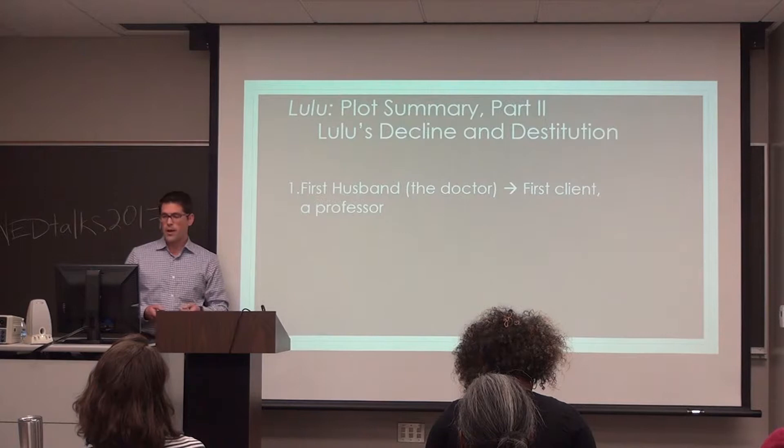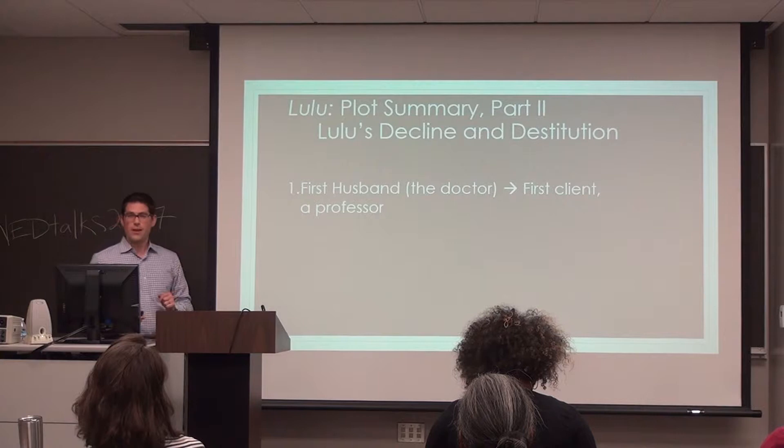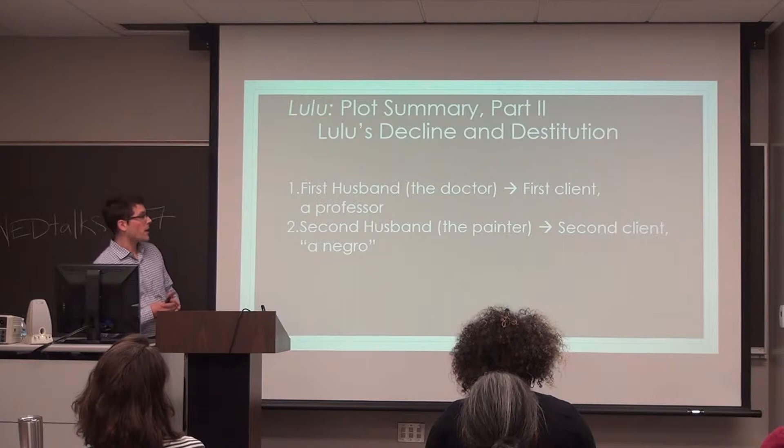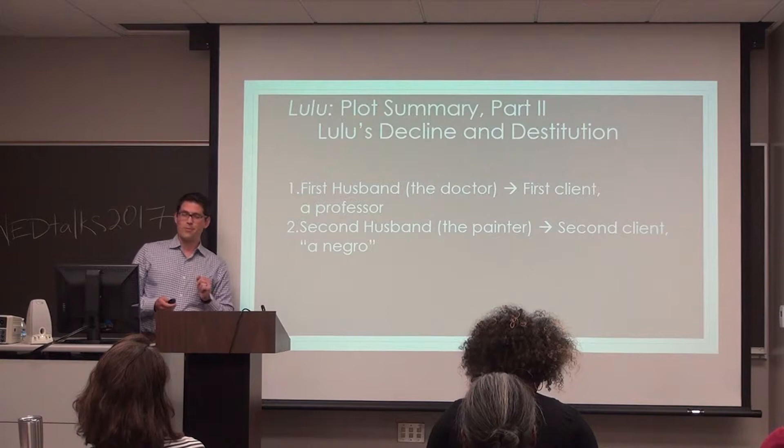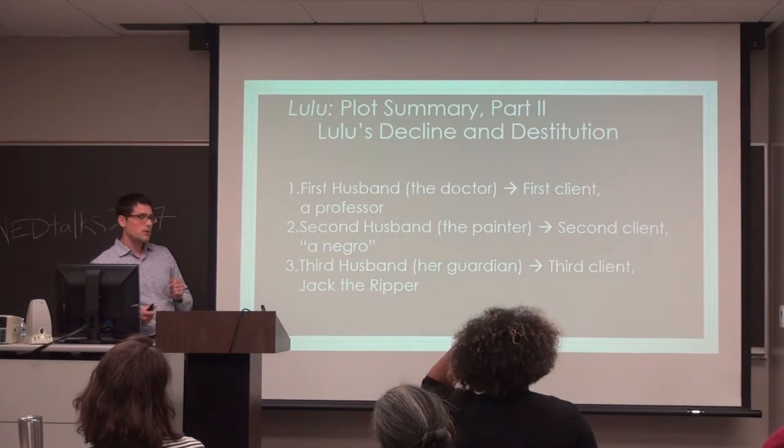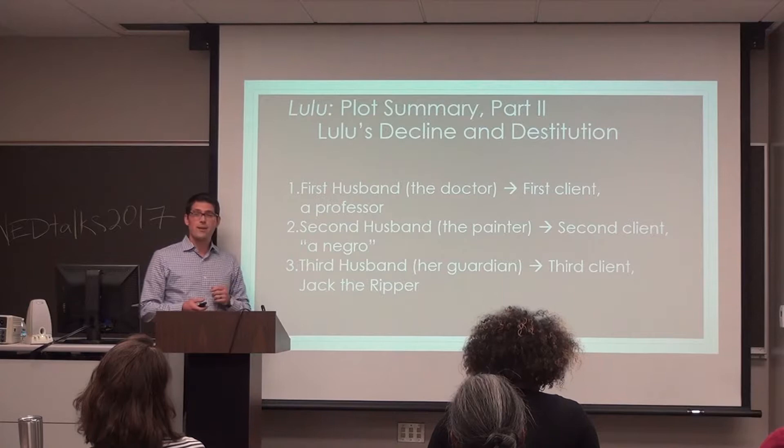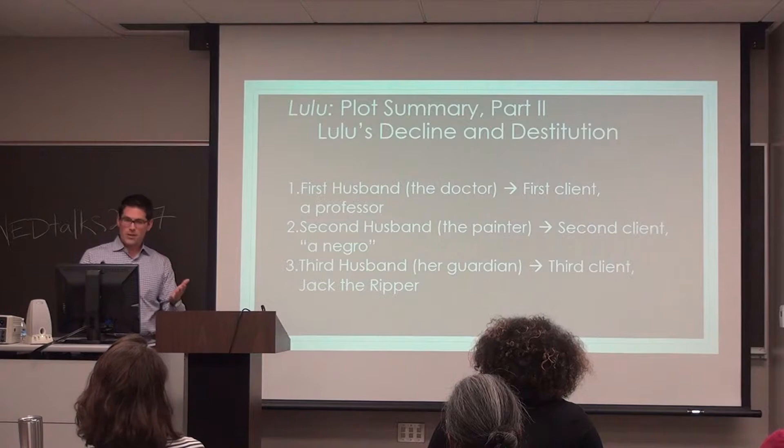Her first client is played by the actor who played her first husband — a professor who was actually silent. Her second client is played by the actor who played the painter, and comes back as a character simply called 'a negro.' And that's the problem — we'll get back to that in just a moment. Her third husband, supposedly the only man she ever truly loved, comes back as her third client. And why were we in London? Well, that's where Jack the Ripper was — so that was Lulu's decline.